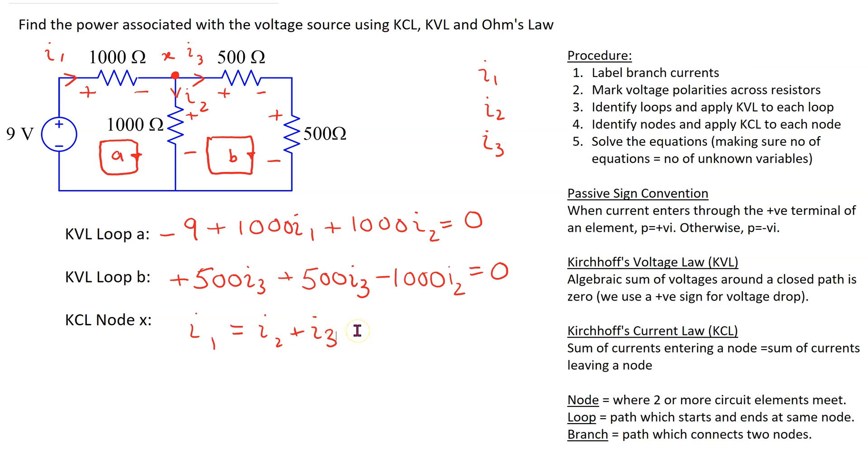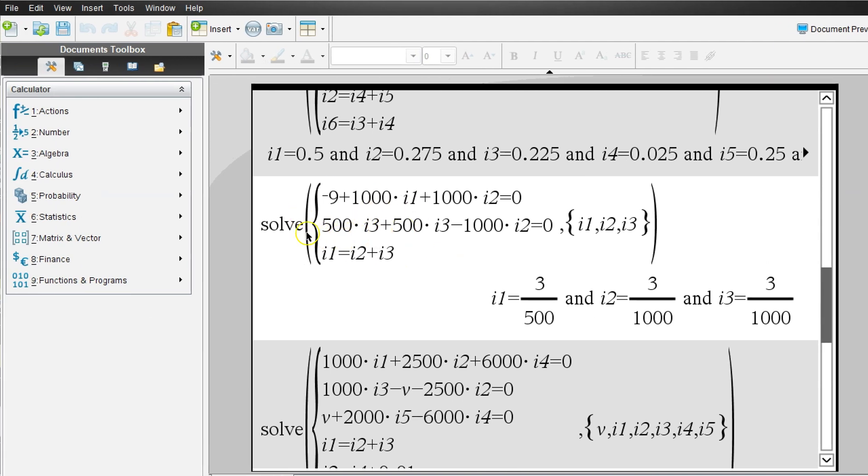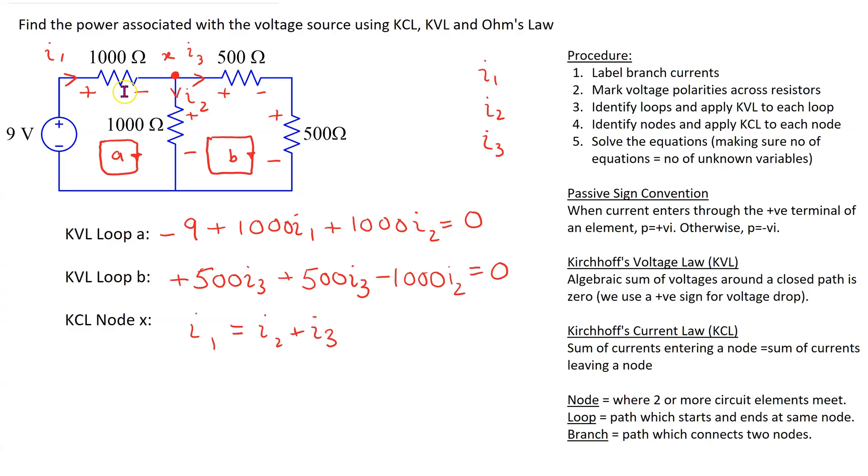Thus we can see that we have three equations and three unknowns. And these can be solved to obtain values of I1, I2 and I3. Using a scientific calculator we can show that these three equations can be solved to give the following values of I1, I2 and I3. Thus the obtained values are I1 is 3 over 500 amps which is equal to 6 milliamps.